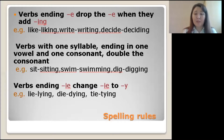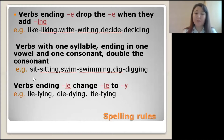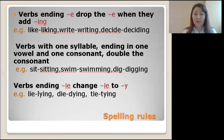Verbs with one syllable ending in one vowel and one consonant double the consonant: 'sit' → 'sitting,' 'swim' → 'swimming,' 'dig' → 'digging.' Verbs ending in 'ie' change 'ie' to 'y': 'lie' → 'lying,' 'die' → 'dying,' 'tie' → 'tying.'